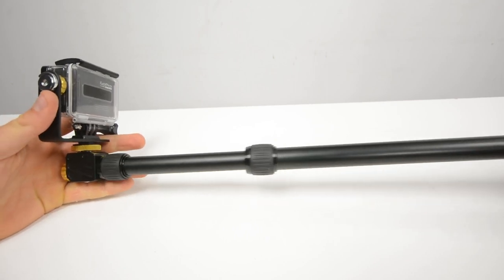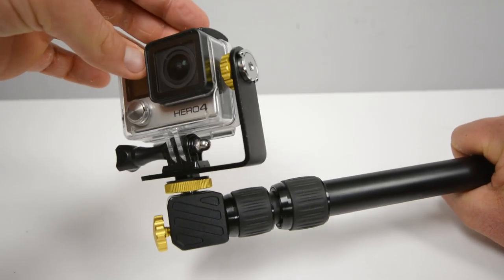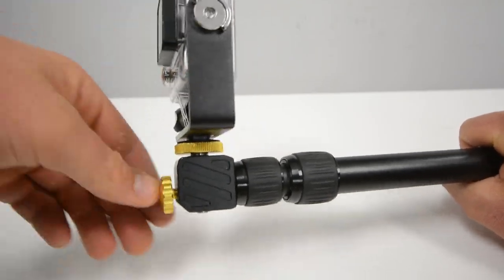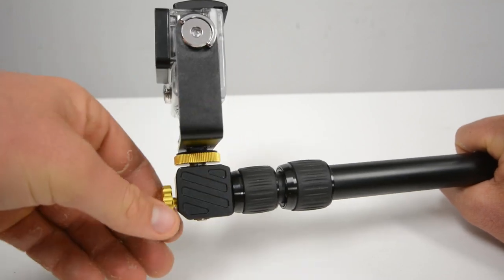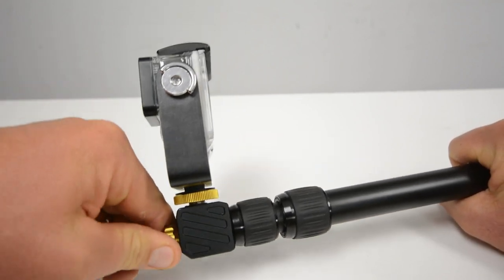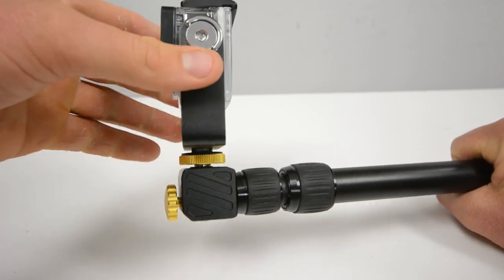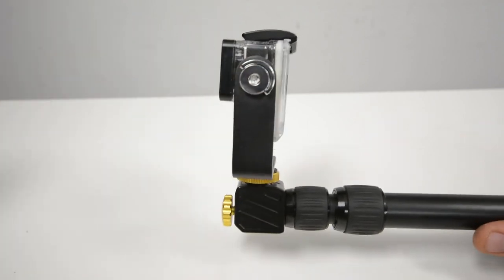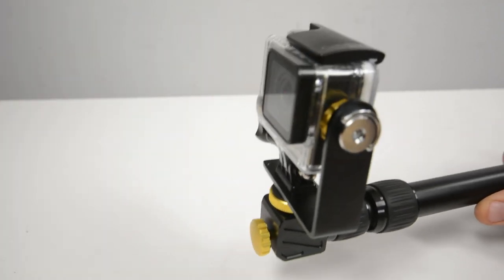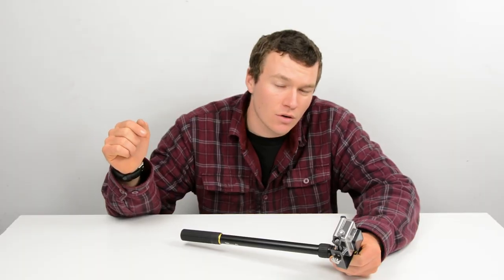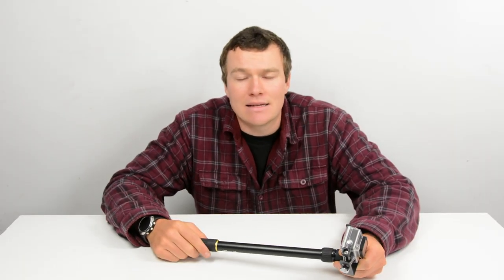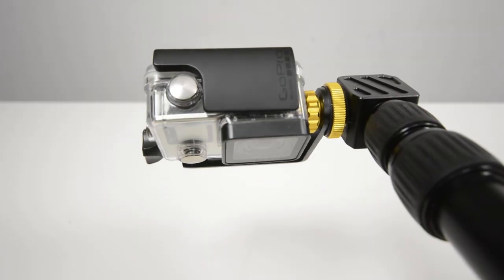If you lock out the pan and tilt functionality using this front bolt, the Micro Jib works just like a normal GoPro pole, allowing you to shoot selfies, chase footage, or anything else you'd shoot with a normal GoPro pole. If you're just looking for a GoPro pole, check out the GoPro pole buyer's guide linked in the video description. But it's a premium feeling GoPro pole when it's locked out.